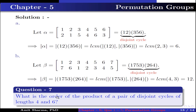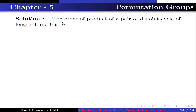Question number 7: what is the order of a product of a pair of disjoint cycles of length 4 and 6? The order equals LCM(4, 6) = 12.